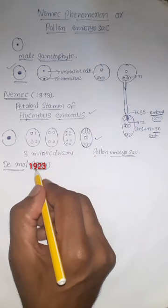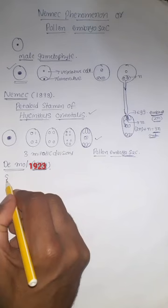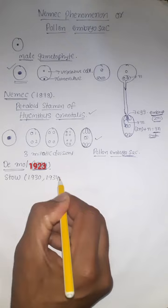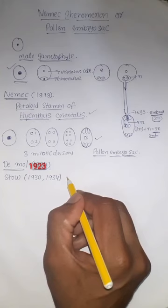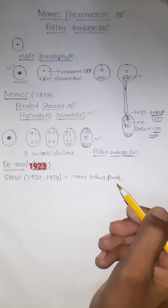One more scientist called Stowe, in 1930 and 1934, he observed the same pollen embryo sacs in many plants. Many other plants. He observed one more thing.